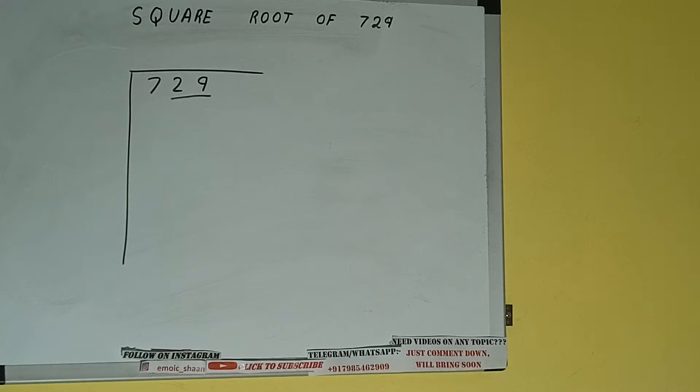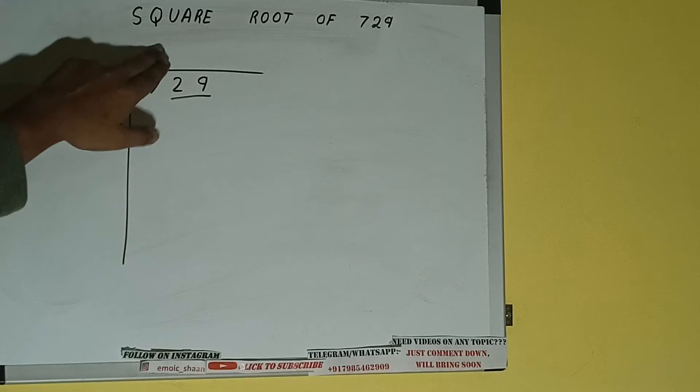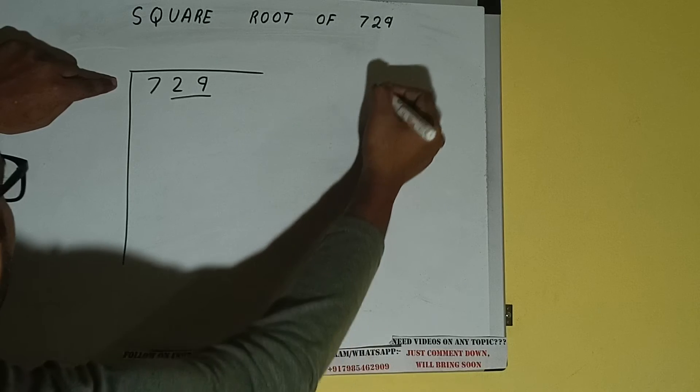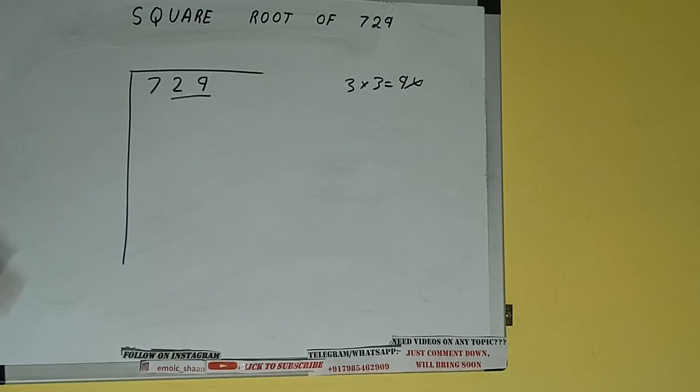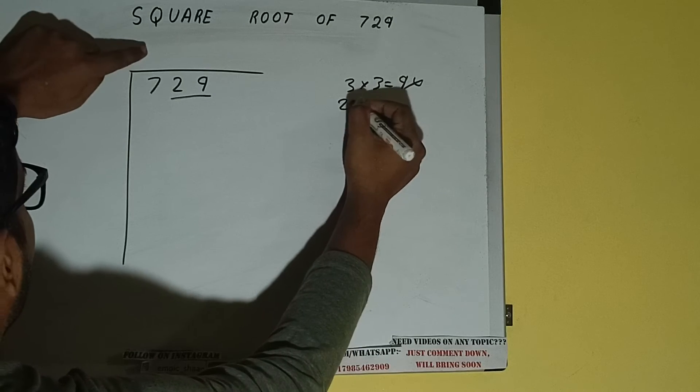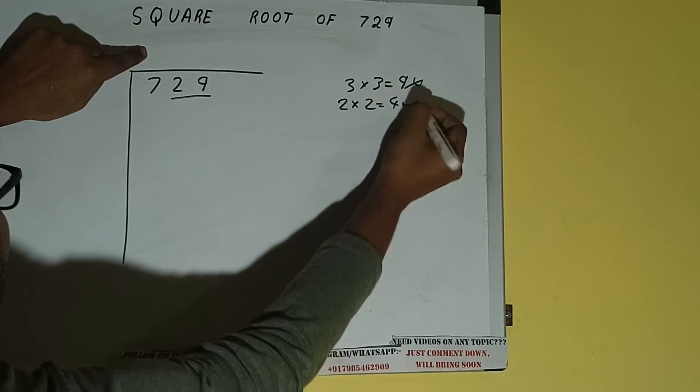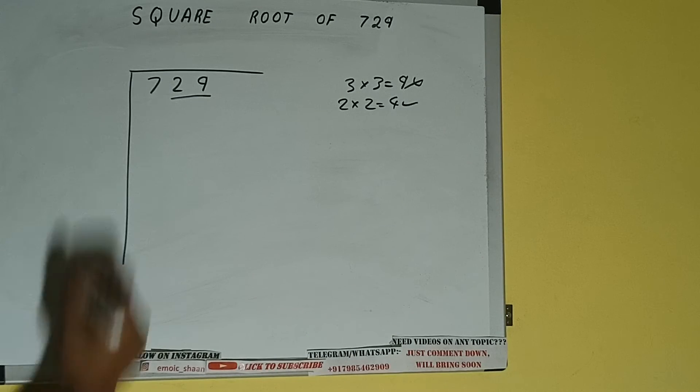Here, the rule is whatever number we write here, we have to write here also. So if we write 3 here and 3 here, it will be 9, which is greater than 7, so we cannot take it. If we write 2 here and 2 here, it will be 4, which is good to take. So 2 here and 2 here.